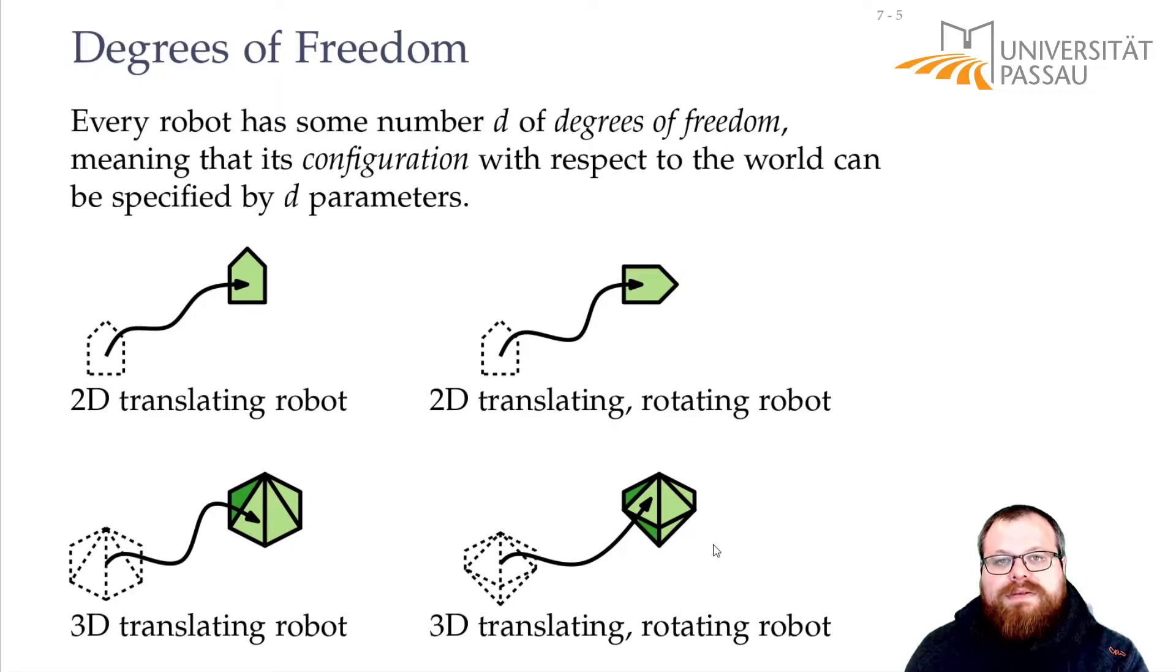Because the rotation can again be in the x-axis and on a second axis. So we can rotate horizontally or we can rotate vertically and we can combine them together. So here we have five degrees of freedom.